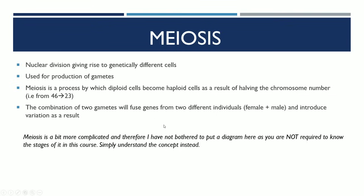The combination of two gametes, sperm and egg, will fuse and produce a zygote that has 46 chromosomes, which is the amount of a normal human cell. Because the gametes fuse together, and each gamete is from two different individuals, it introduces a lot of variation, and that's a good thing. Meiosis is a bit more complicated in terms of the stages, so I haven't bothered to put it on. You're not actually required to know it, so I wouldn't worry too much about that. Just understand the concept.